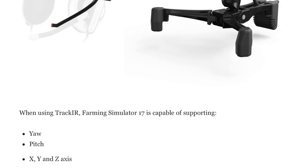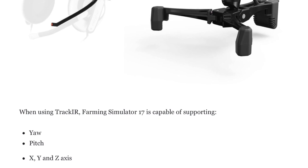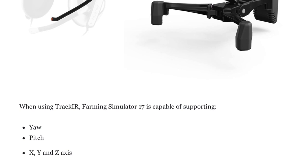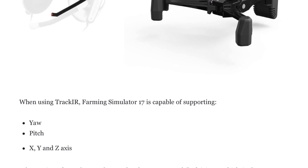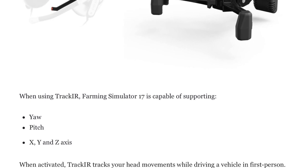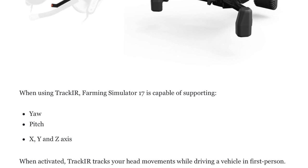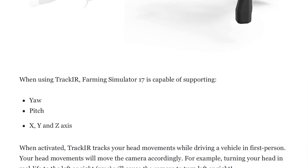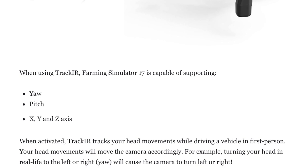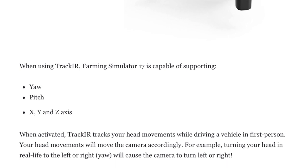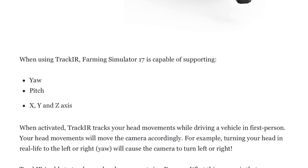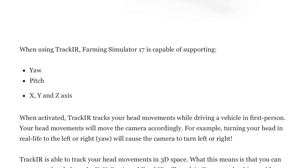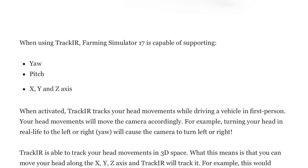When using Track IR, Farming Simulator 17 is capable of supporting yaw, pitch, as well as X, Y, and Z axis location tracking. When activated, Track IR tracks your head movements while driving a vehicle in first person — your head movements will move the camera accordingly. For example, turning your head in real life to the left or right, which is yaw, will cause the camera to turn left or right.